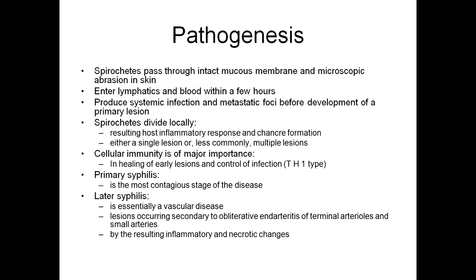Regarding pathogenesis: once the spirochete passes through intact mucous membrane and microscopic abrasions in the skin, it enters the lymphatics and blood within a few hours, producing systemic infection and metastatic foci before development of a primary lesion — the chancre. Spirochetes divide locally, resulting in a host inflammatory response and chancre formation; either a single lesion or less commonly multiple lesions may be seen. Cellular immunity is of major importance in healing of early lesions and control of infection.